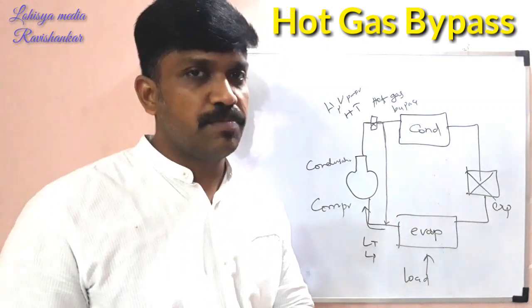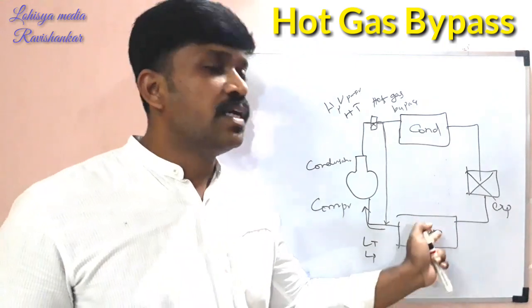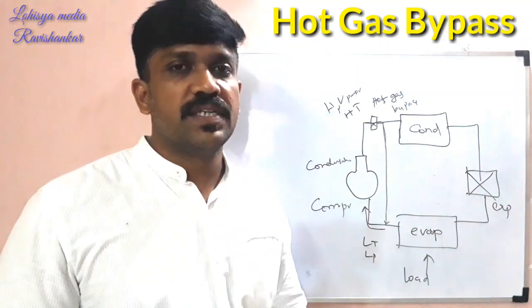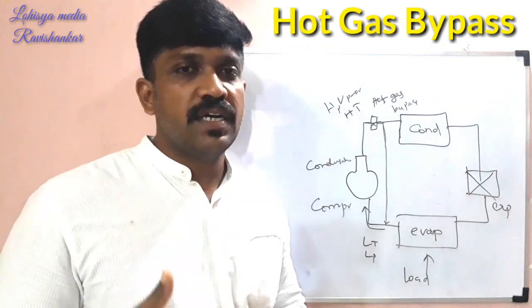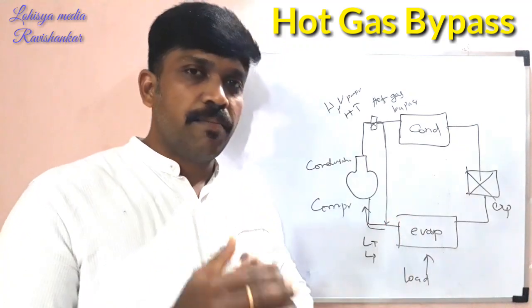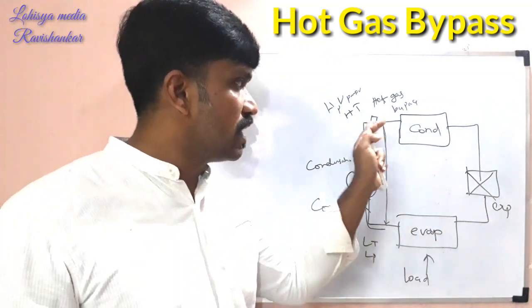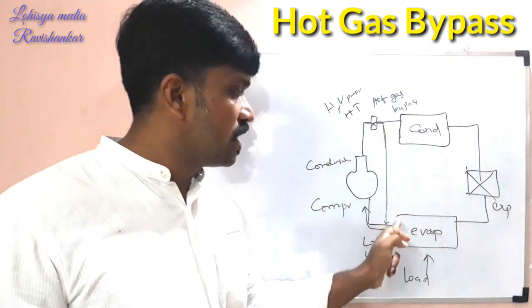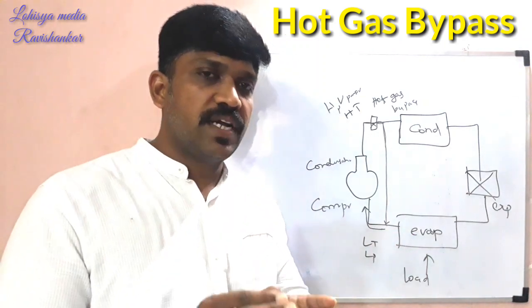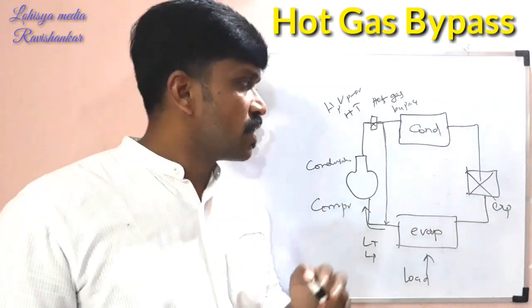We will stop the compressor again. We will remove the air. If we stop the compressor again, we will remove the refrigeration cycle. We will put gas on the outside. Then the gas will be a little higher in the compressor. The temperature will be a little higher in the compressor. This is the basic concept of hot gas bypass.